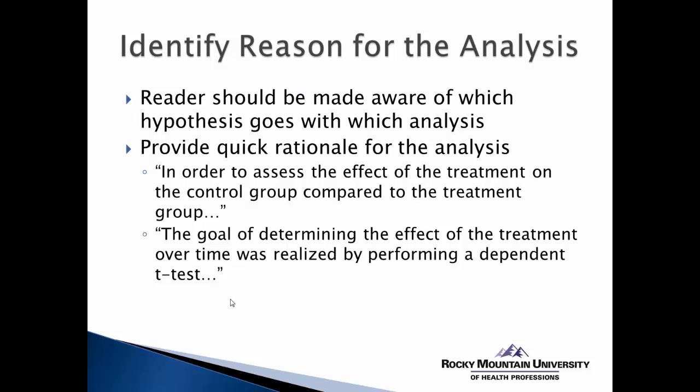The next thing you'll want to make sure you're going to be able to do in your narrative is to identify the reason for the analysis. This is where the reader should be able to identify which hypothesis goes with which analysis. Remember, every hypothesis should have an analysis associated with it and vice versa. For example: 'In order to assess the effect of the treatment on the control group compared to the treatment group' — that's our reason for doing the analysis. Or: 'The goal of determining the effect of the treatment over time was realized by performing a dependent samples t-test.' We're identifying for the reader why we're doing this particular analysis, and this can be done very concisely and succinctly.